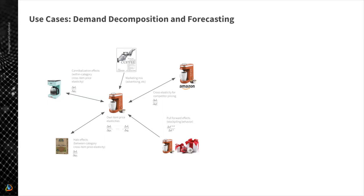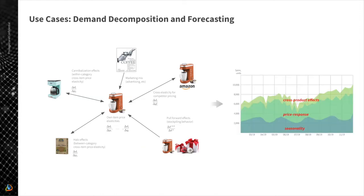There are also external factors like marketing campaign intensity and advertising that influence demand, but unfortunately we cannot observe all these factors directly. Typically we can observe sales data, pricing information, and some marketing data. Ideally, we want to take our sales data and decompose it into different effects — including seasonality, own-price elasticity, discount response, and cross-effects with related products or competitors.